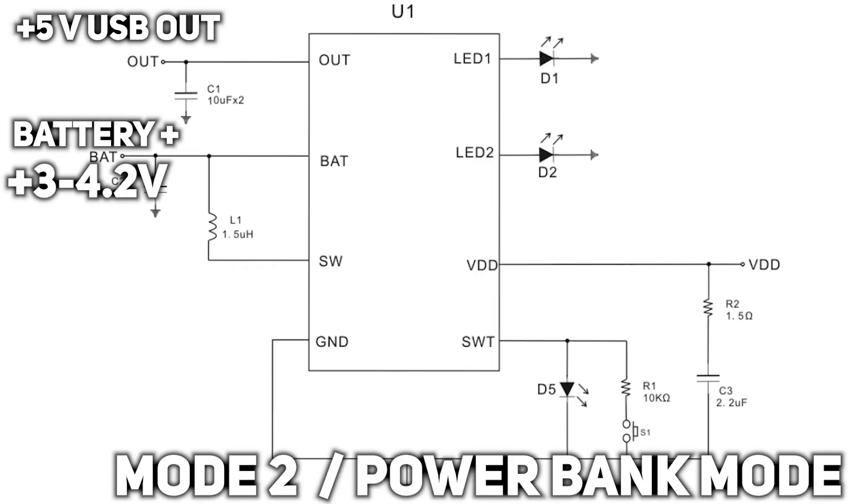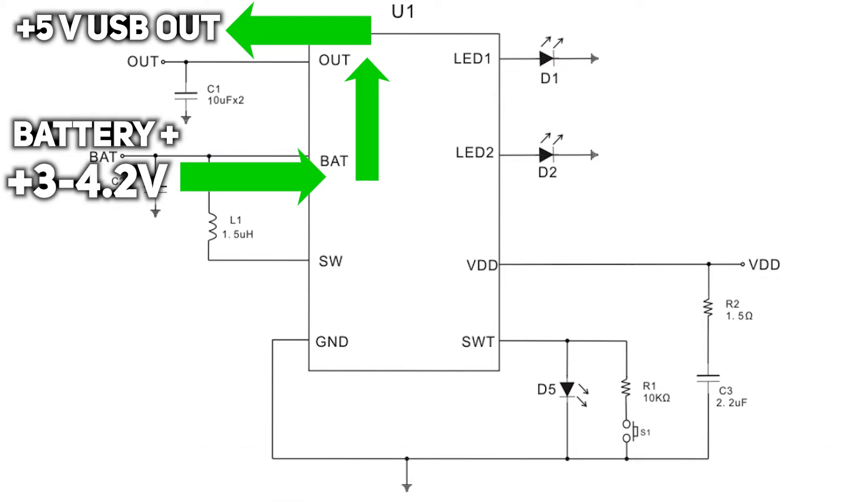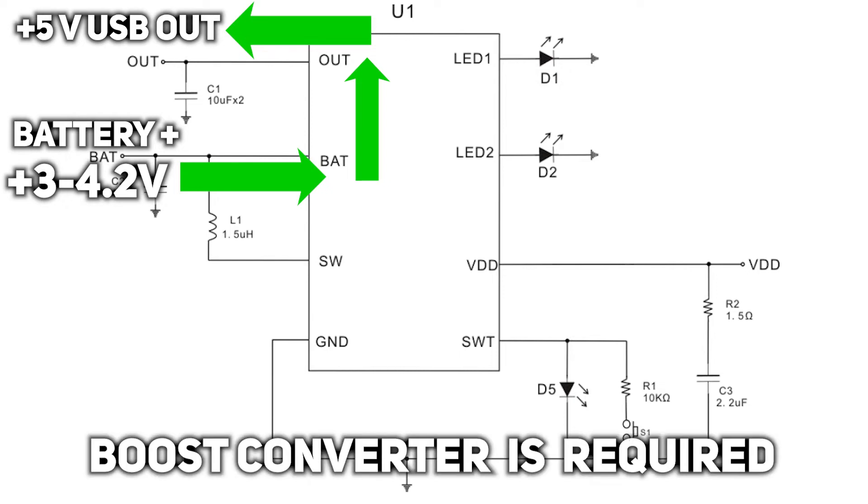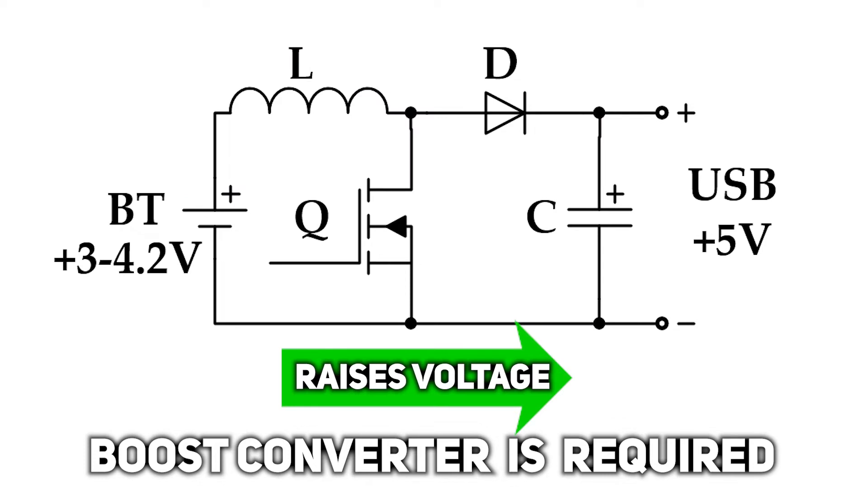At another mode, when the circuit works as a power bank, the situation is opposite and battery lower voltage must be converted to a higher one, to 5V to power USB port. Now it requires a boost converter, which can boost lower battery voltage to 5V. Simplest boost circuit that can be used looks like this.